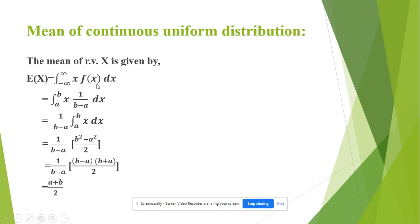Substitute the value of f(x) we shall get integration a to b x times 1 upon b minus a. As 1 upon b minus a is constant, take it outside the integration and integrate x with respect to x. After that substitute the value of integration limits.